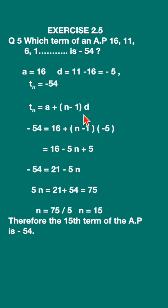t_n is -54, a is 16, (n - 1) as it is, and d is -5. So -54 = 16 + (n - 1)(-5). Opening the bracket you get 16 - 5n + 5.